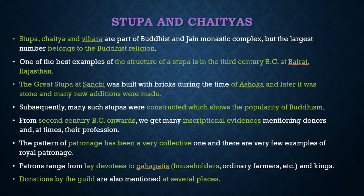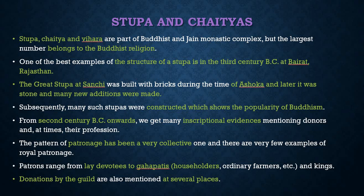The followers of Buddha enshrined his mortal remains in a number of Stupas, beginning a tradition that spread to many countries and continues till today. Later Stupas housed the mortal remains of others, personal belongings, and other Buddhist teachings. Stupa, Chaitya, and Vihara are part of Buddhist and Jainist monastic complexes, but most predominantly, Stupas, Chaityas and Viharas belong to Buddhism. One of the best examples of a Stupa structure from the 3rd century BCE is at Bairat, Rajasthan. The Great Stupa at Sanchi was built with rock during the time of Ashoka, and later stone additions were made.